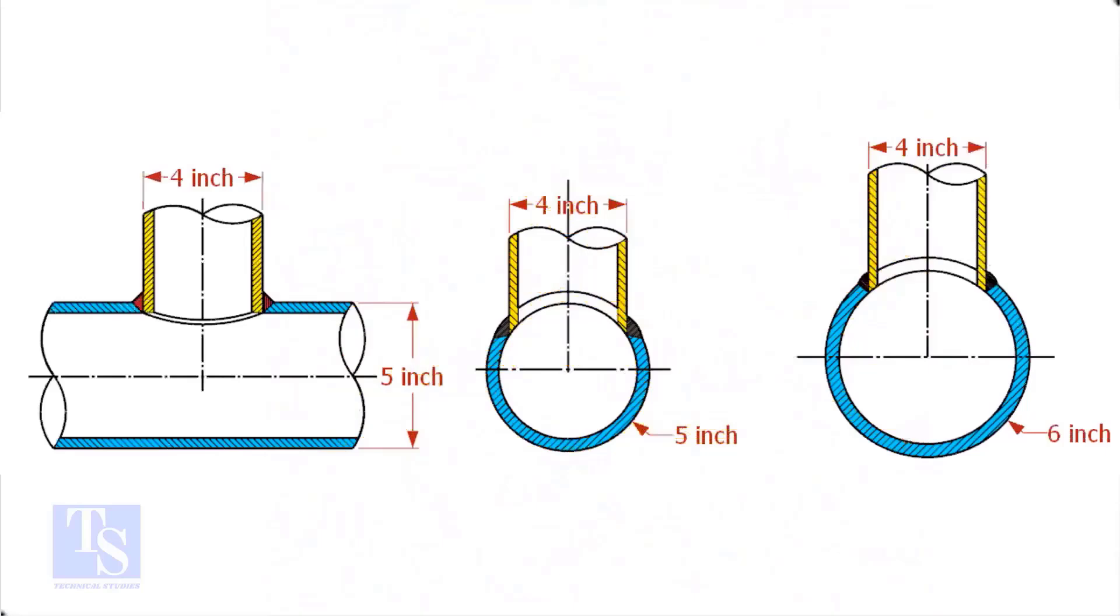In stubbing connections, the branch pipe size is one or more sizes smaller than the header pipe. If both header and branch sizes are the same, then a stub in connection is not possible.